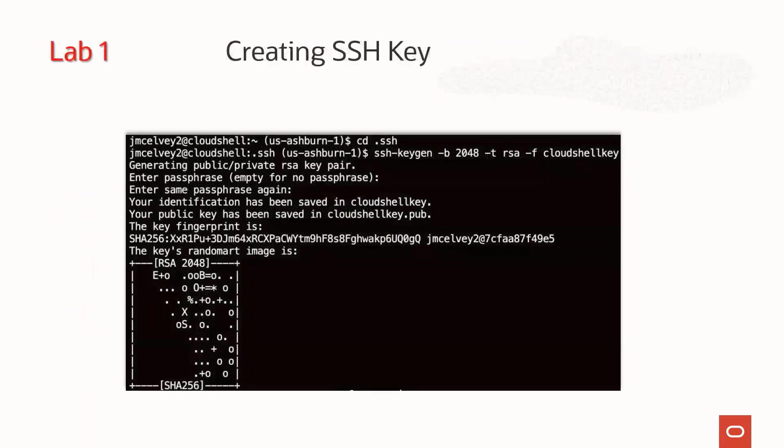First, you'll create an SSH key that you will use to access your source database. If you already have an SSH key ready, you can skip this step. There are a variety of methods you can use to do this, but in this example, we'll be using Oracle's Cloud Shell since it's simple to use and available in OCI.